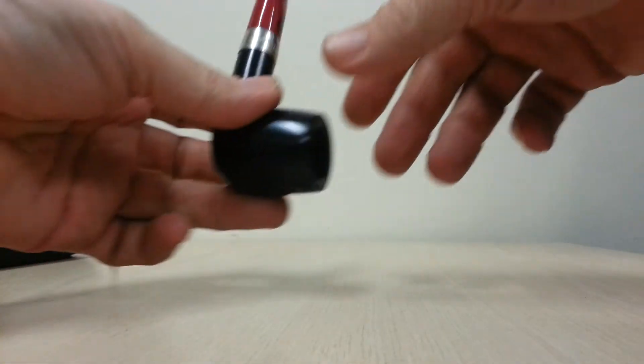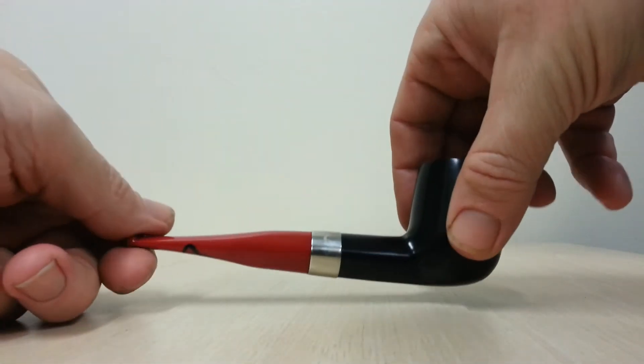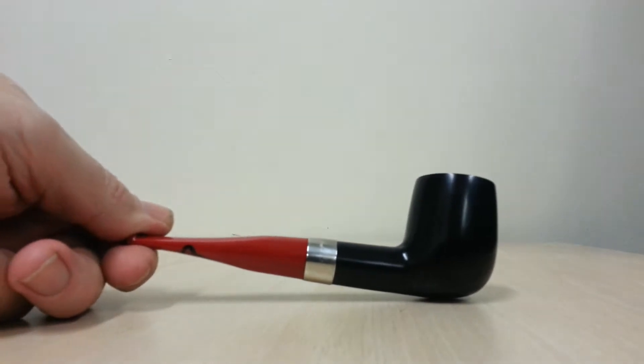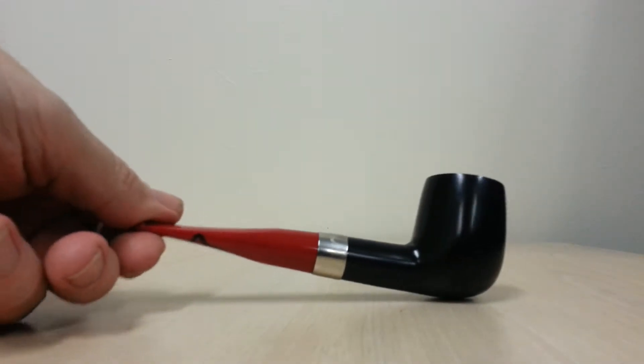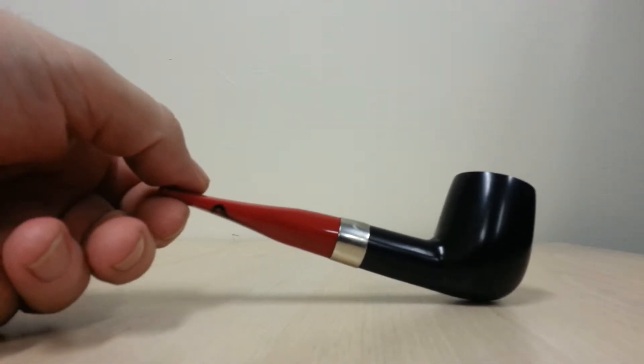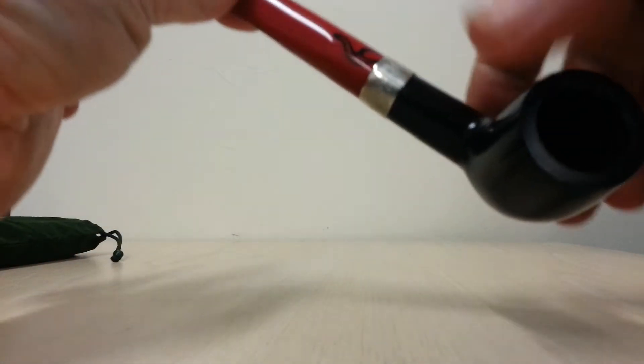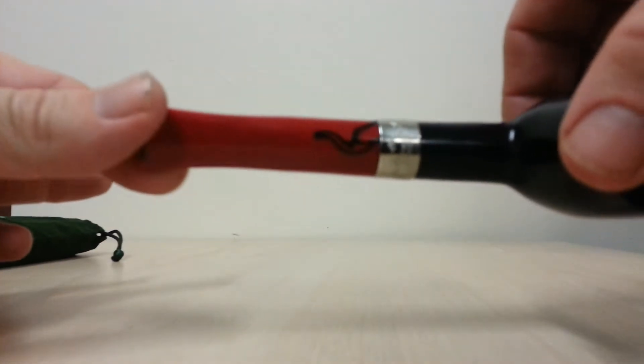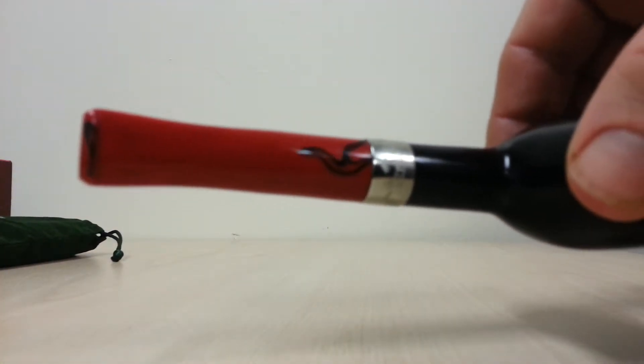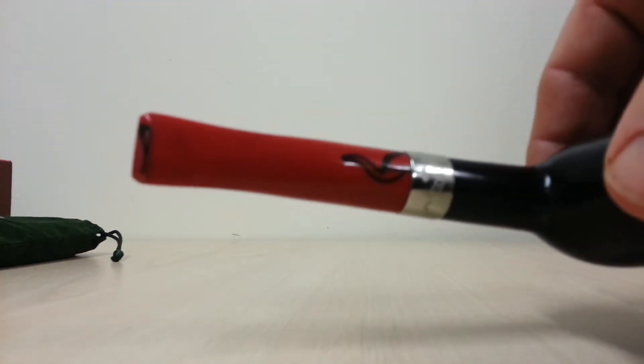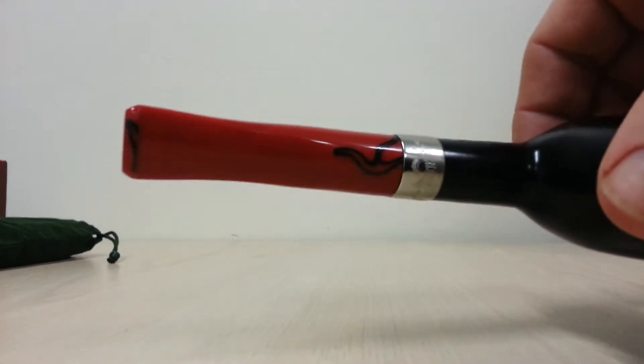The stem, especially from this side, is almost all red. You wouldn't know really that it's a Dracula pipe. There's just a little swirl there. So that shows you when you see the pictures, it's not always going to be like that.